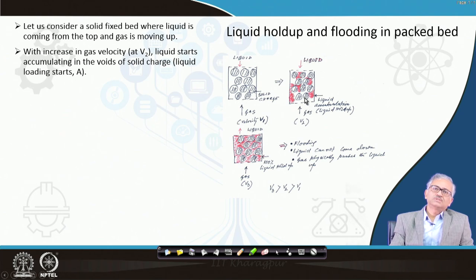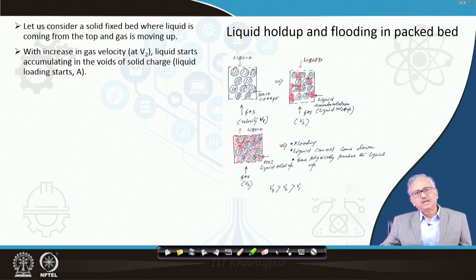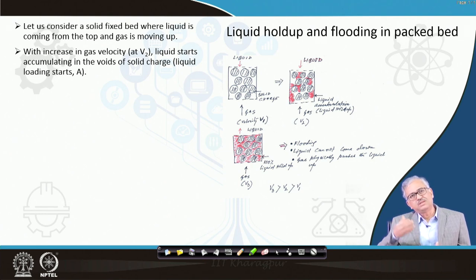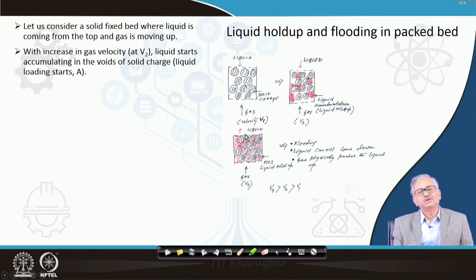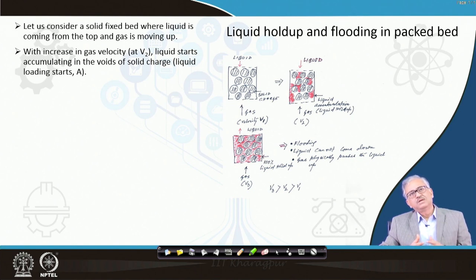If you go on increasing velocity, the holdup will keep increasing: 10 percent, 20 percent, 30 percent, 40 percent, 60 percent, 80 percent, 90 percent holdup. As holdup increases, the channels for gas also decrease and frictional resistance further increases, leading to 100 percent holdup. Beyond that, if you increase the gas velocity further, the liquid will be physically pushed upward. Instead of coming down, liquid will move up because the gas thrust is much greater than gravity. That condition is called the flooding condition.